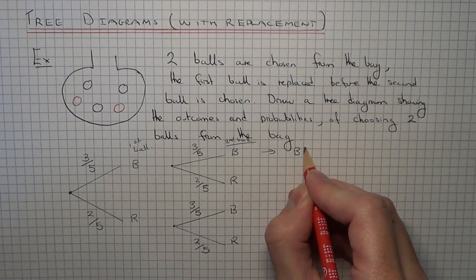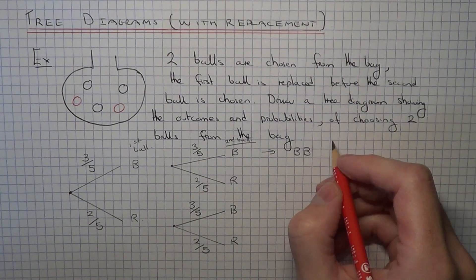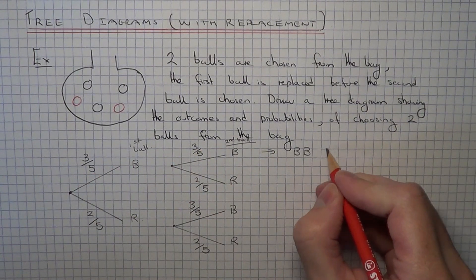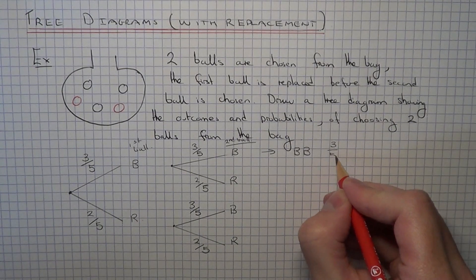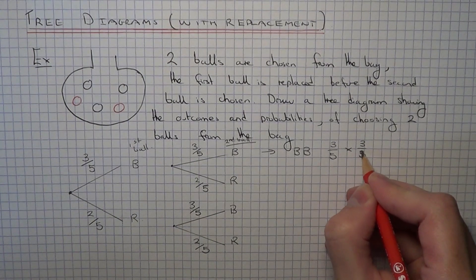So to work out the probability of picking two black balls, we multiply the two probabilities together. Make sure you multiply them, not add them.